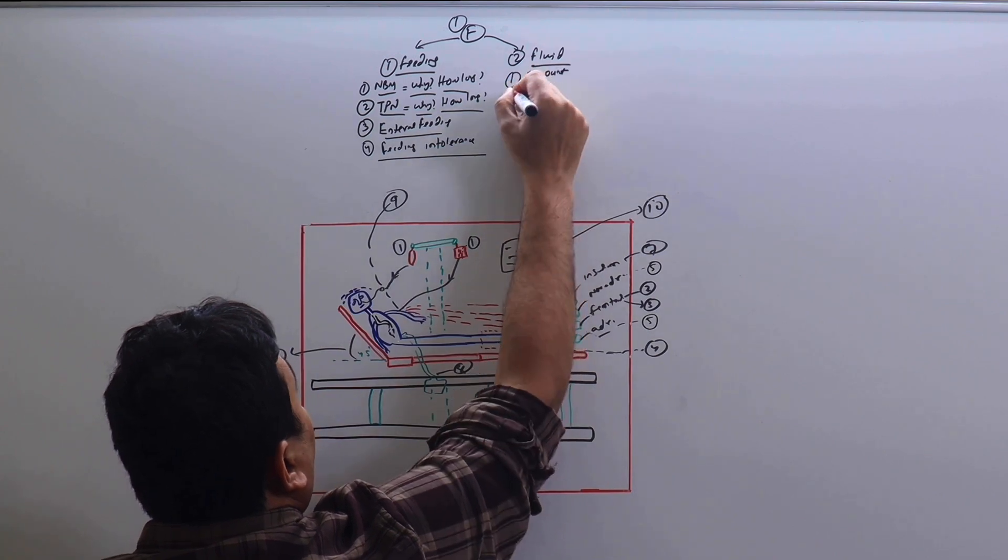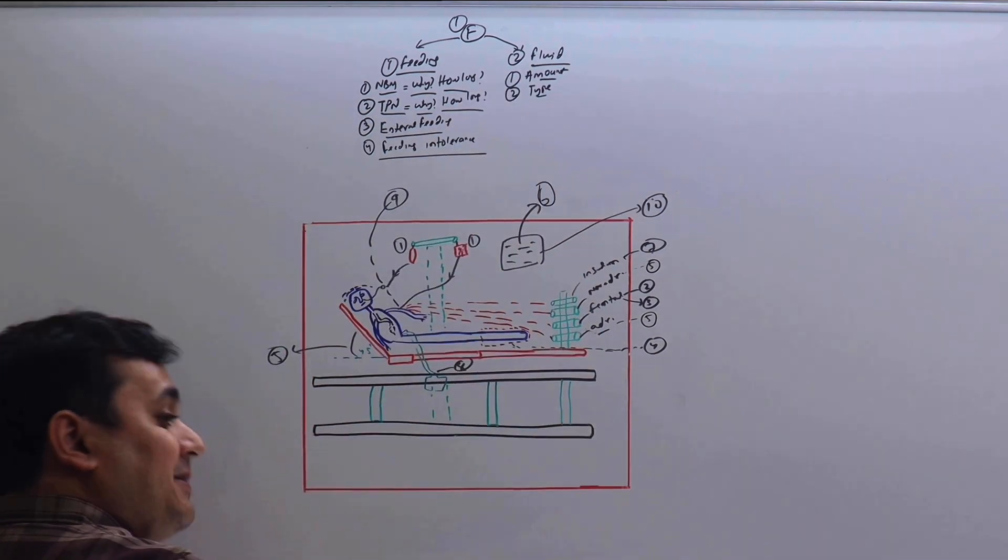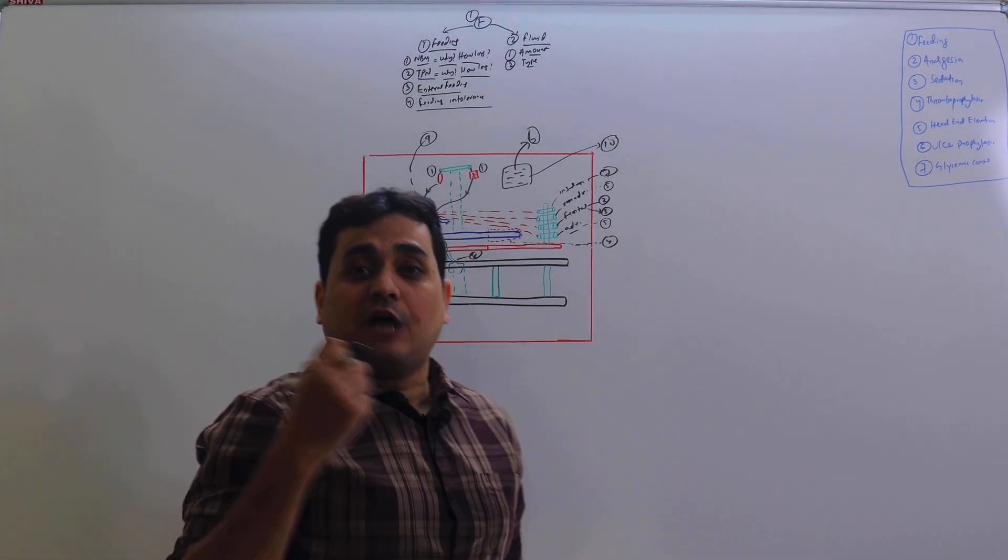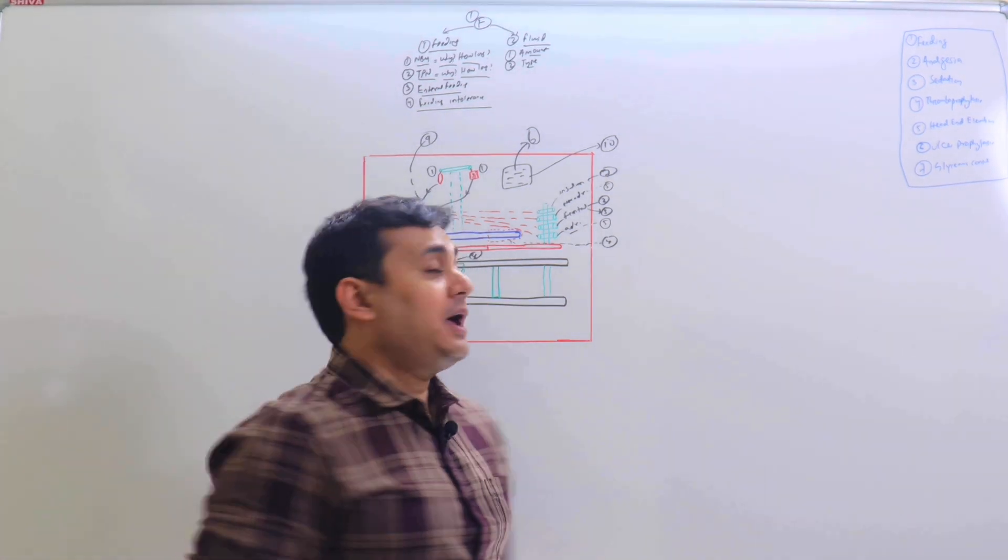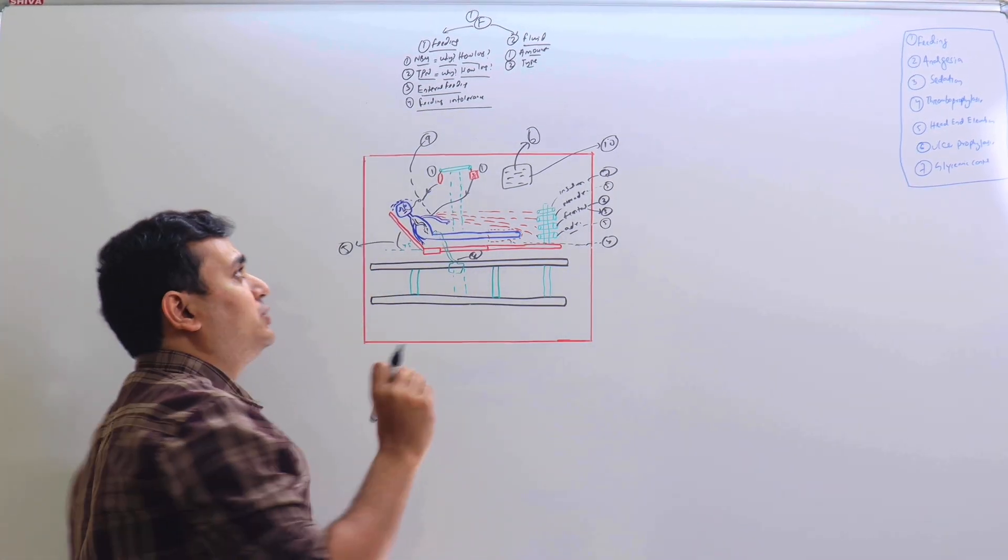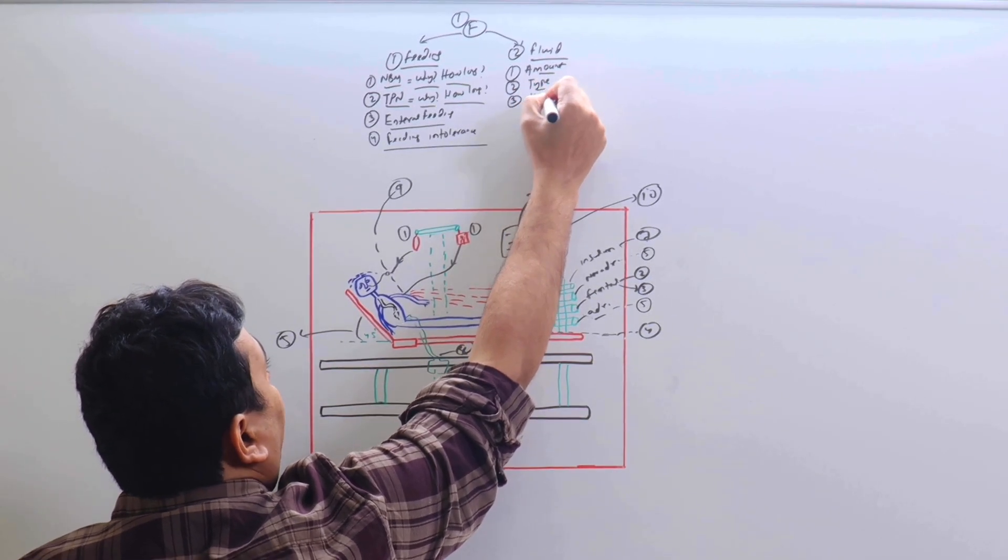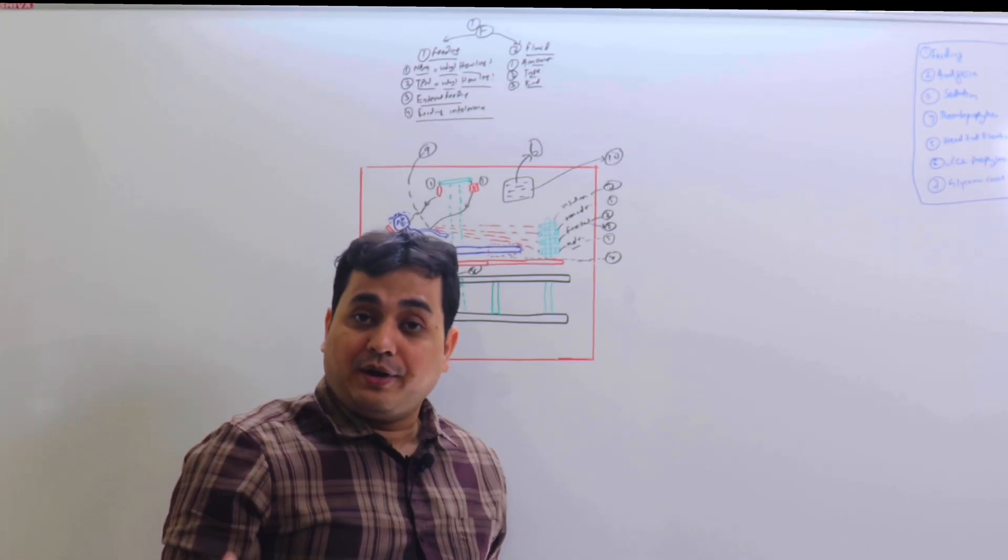In the fluid part, there are a few questions that need to be answered. Number one is amount—how much fluid you are giving. Number two is types—what type of fluid the person is getting, whether it is normal saline, balanced salt solution, albumin, isotonic bicarbonate, dextrose solution, and why the person is receiving such solution. Number three is kind of fluid—whether a person is receiving maintenance fluid, resuscitation fluid, or replacement fluid.